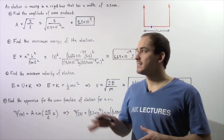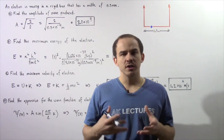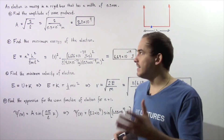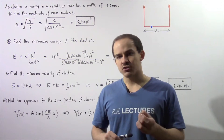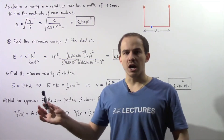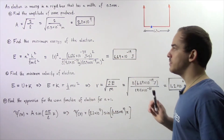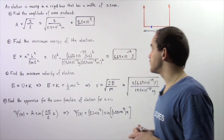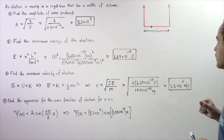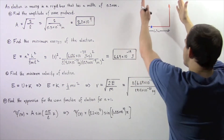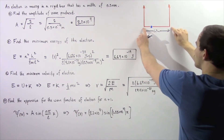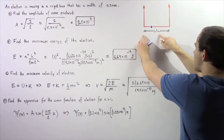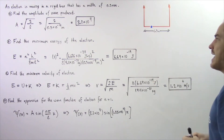Let's examine an example dealing with a particle moving inside a rigid box, also known as an infinite potential well. We have an electron moving along the bottom of our rigid box, with the width of the box given as 0.3 nanometers. The box has two walls and two corners, and the electron moves along the bottom of the box with a length of 0.3 nanometers.